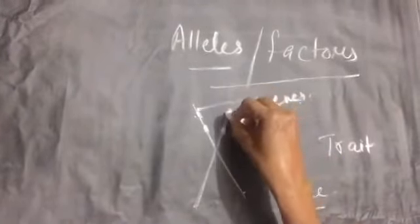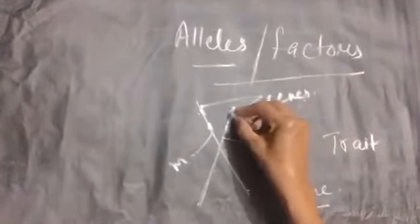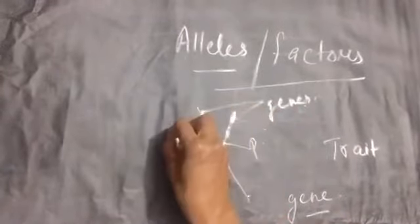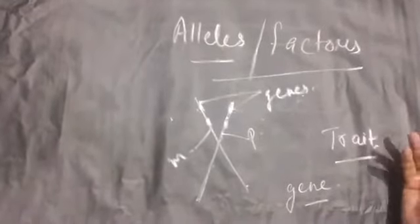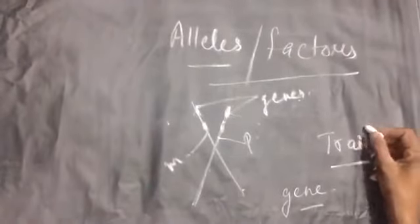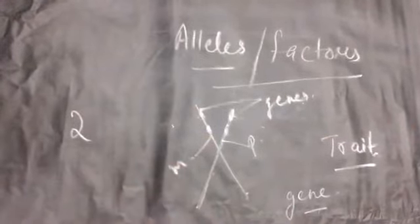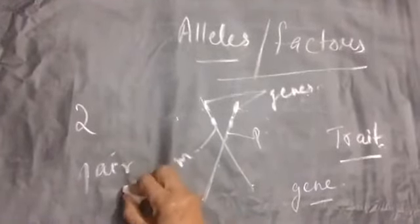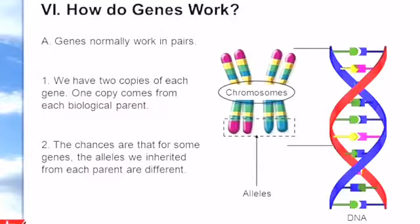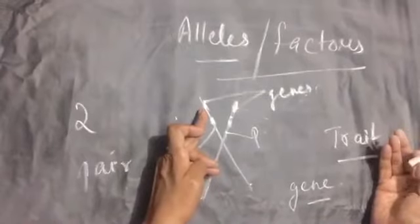Suppose this is the paternal strand and this is the maternal strand. This is the paternal allele and this is the maternal allele for a character or a trait. To express a trait, two alleles are needed — a pair of alleles. One is the paternal version and the other is the maternal version. They work together as a pair for expressing a character or a trait.